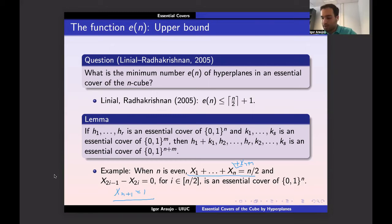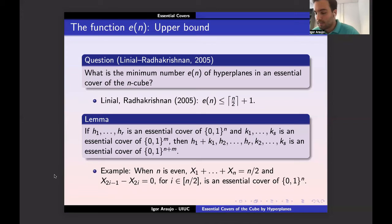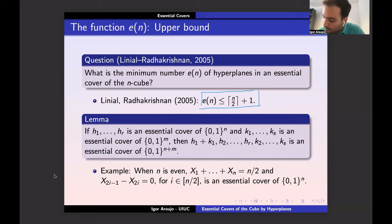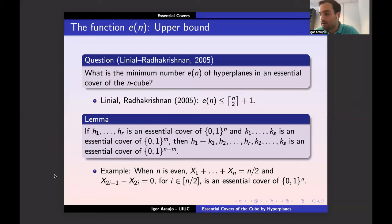The inductive construction is important because we can find many different coverings this way by varying which hyperplane is taken first. We believe the bound e(n) = ⌈n/2⌉ + 1 should hold with equality for every n. Studying all these different coverings can be helpful for trying to prove matching lower bounds — but the variety of possible constructions is one of the main difficulties.